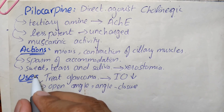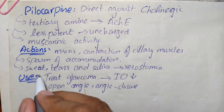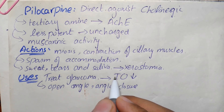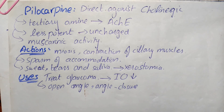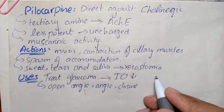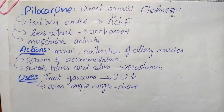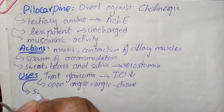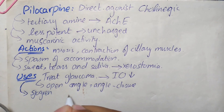Pilocarpine is one of the most important agents for treating glaucoma — both open angle glaucoma and angle closure glaucoma — because it decreases the intraocular pressure of the eye. Not only this, it also causes increased secretion of sweat, tears, and saliva, and therefore it can be used to promote these secretions in conditions such as xerostomia. In patients having xerostomia due to irradiation of the head and neck, we can give pilocarpine to increase the secretion of saliva. It is a potent stimulator of secretions, but its use for producing these effects has been limited due to lack of selectivity.